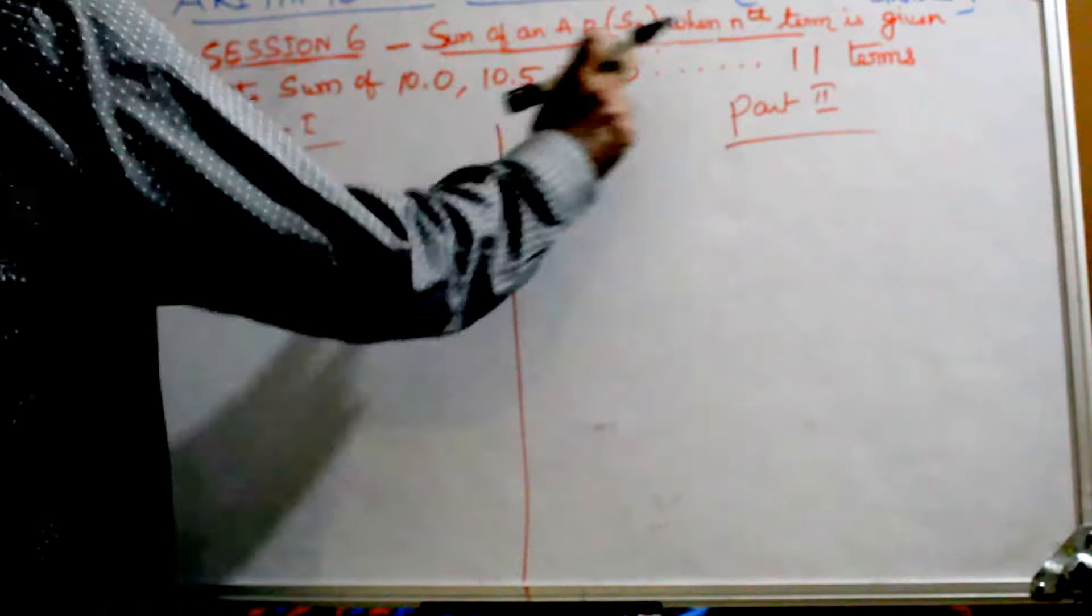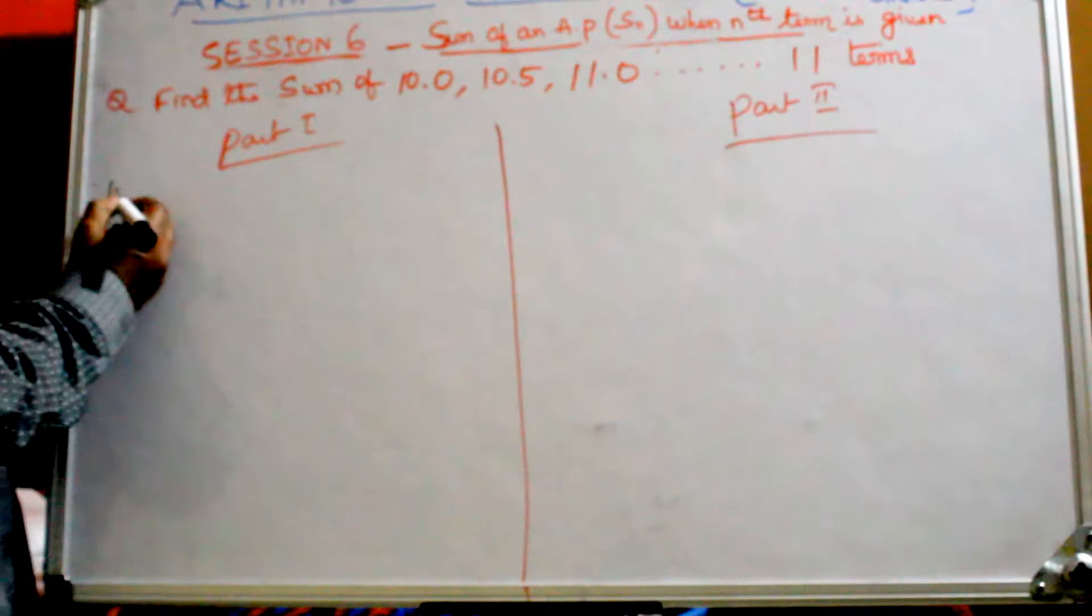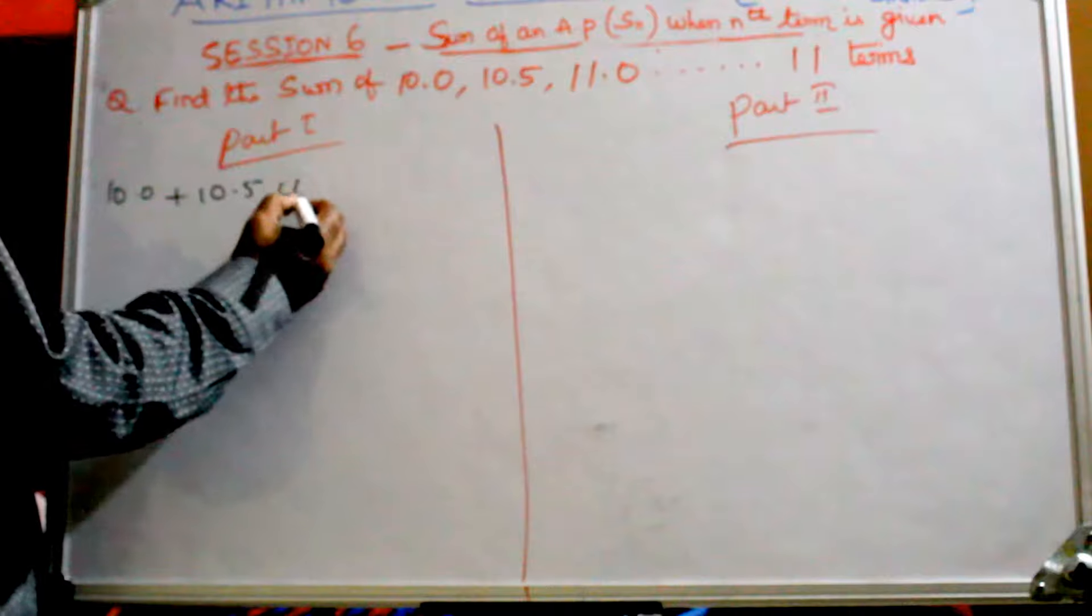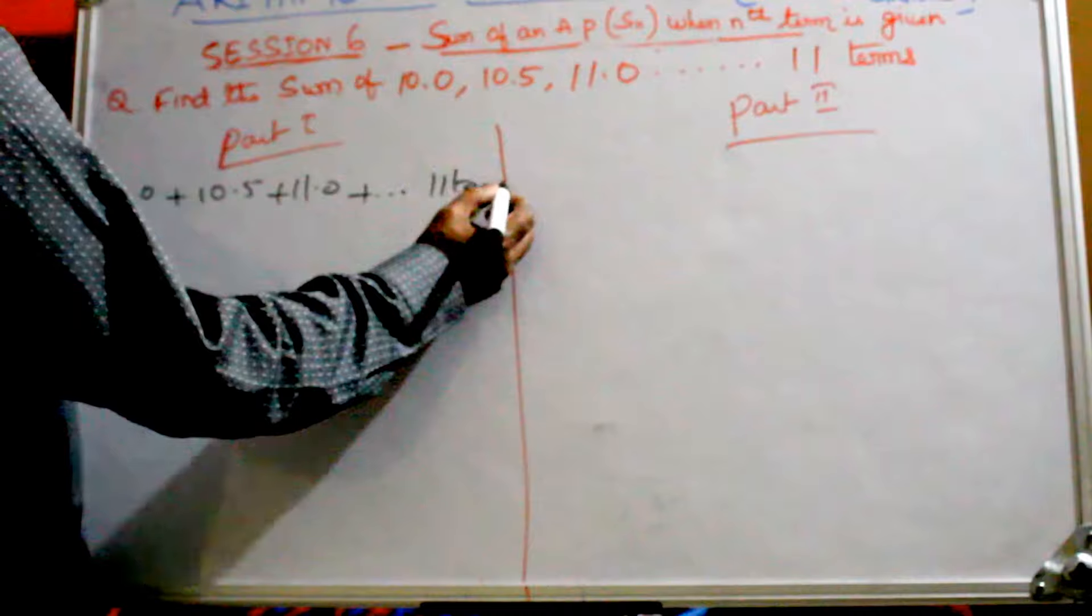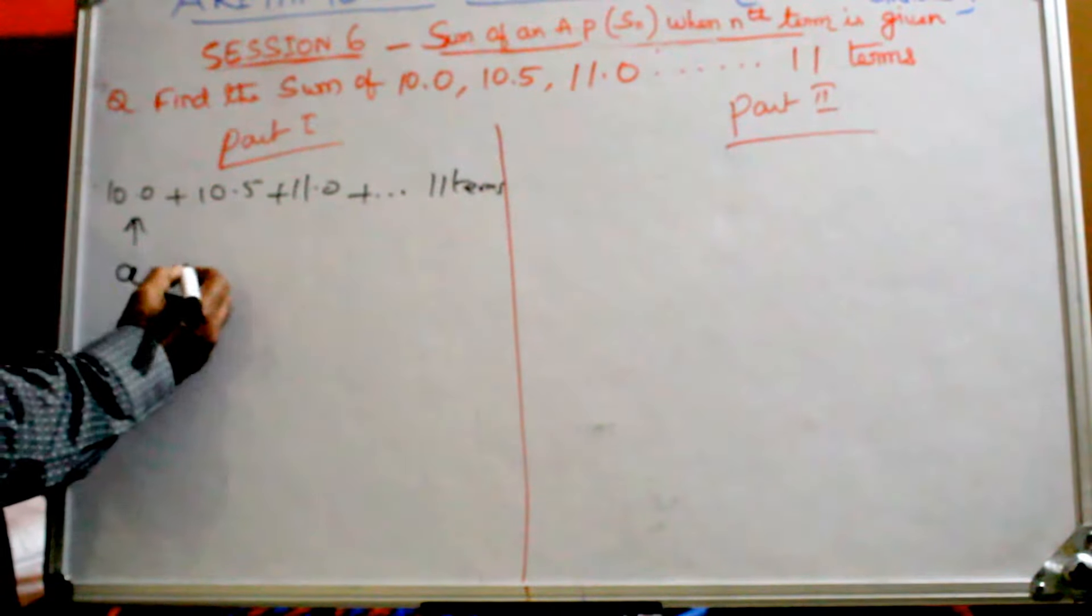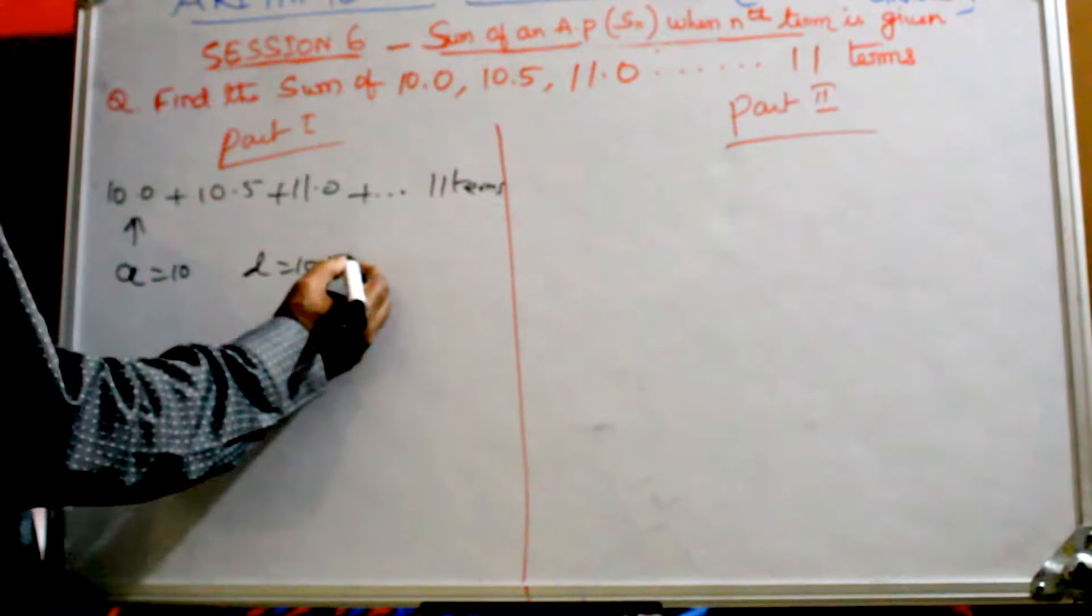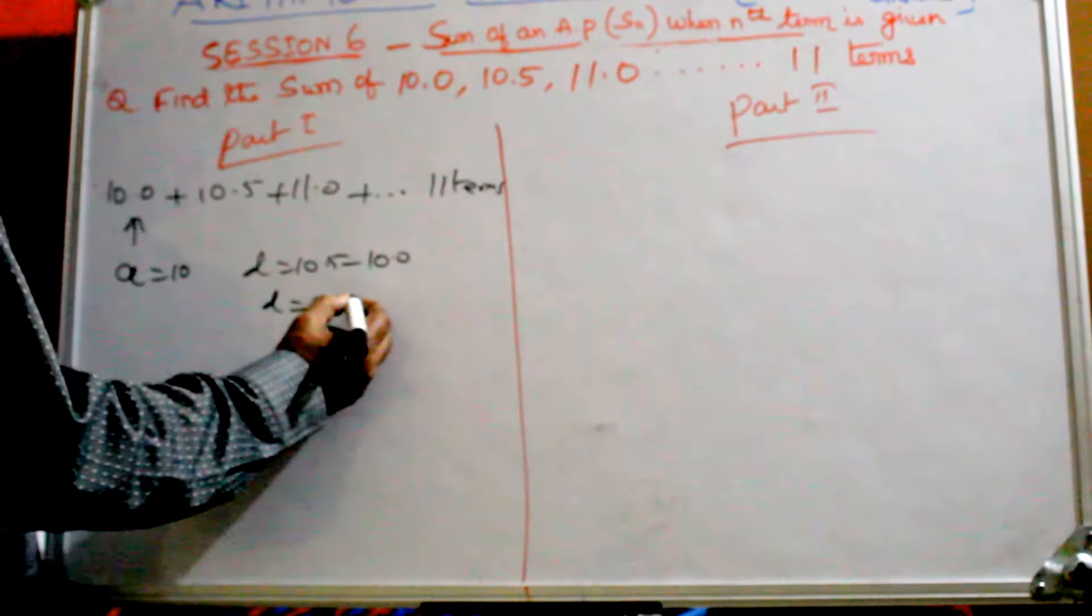One more sum with decimals. Same method. Take 10.0 + 10.5 + 11.0... up to 11 terms. Three terms is enough. Part 1: A is 10.0, or just 10. D equals 10.5 minus 10.0, so D equals 0.5.